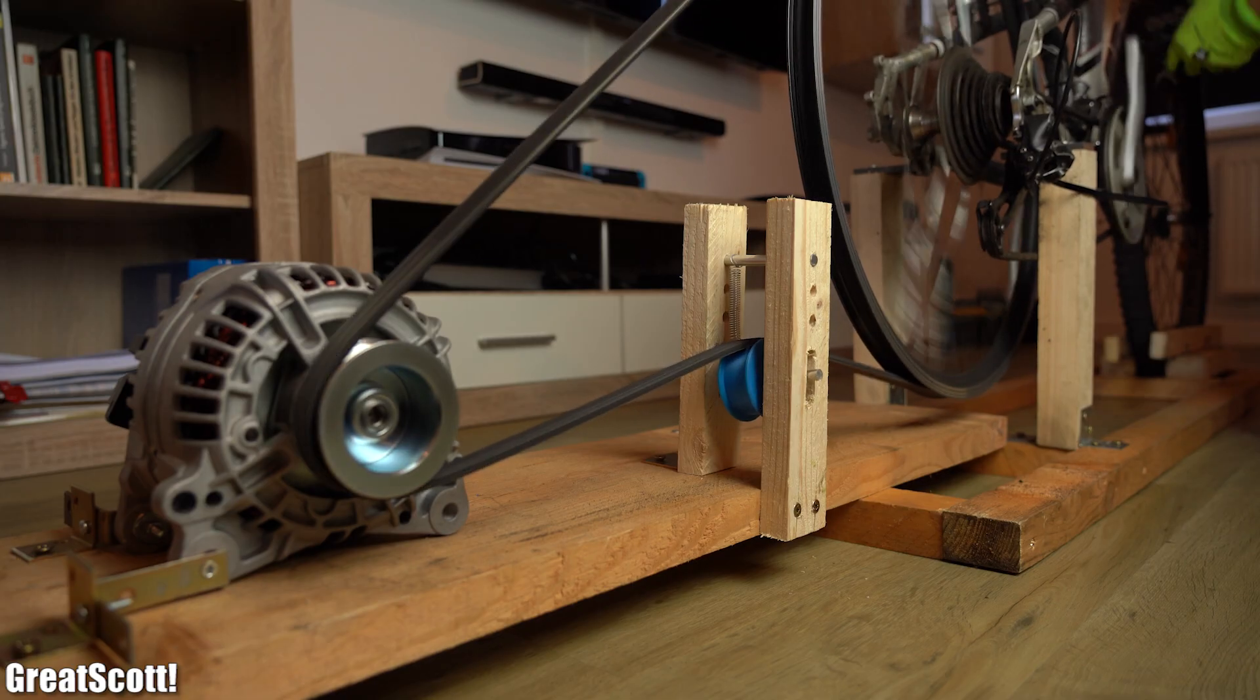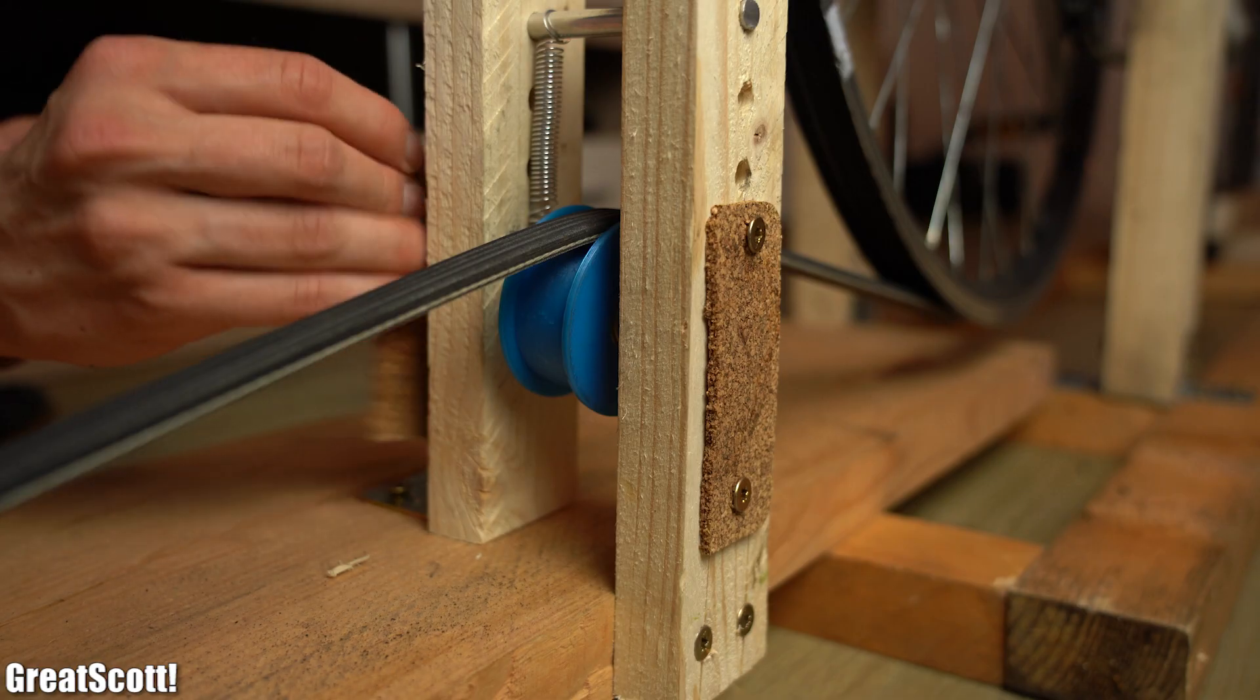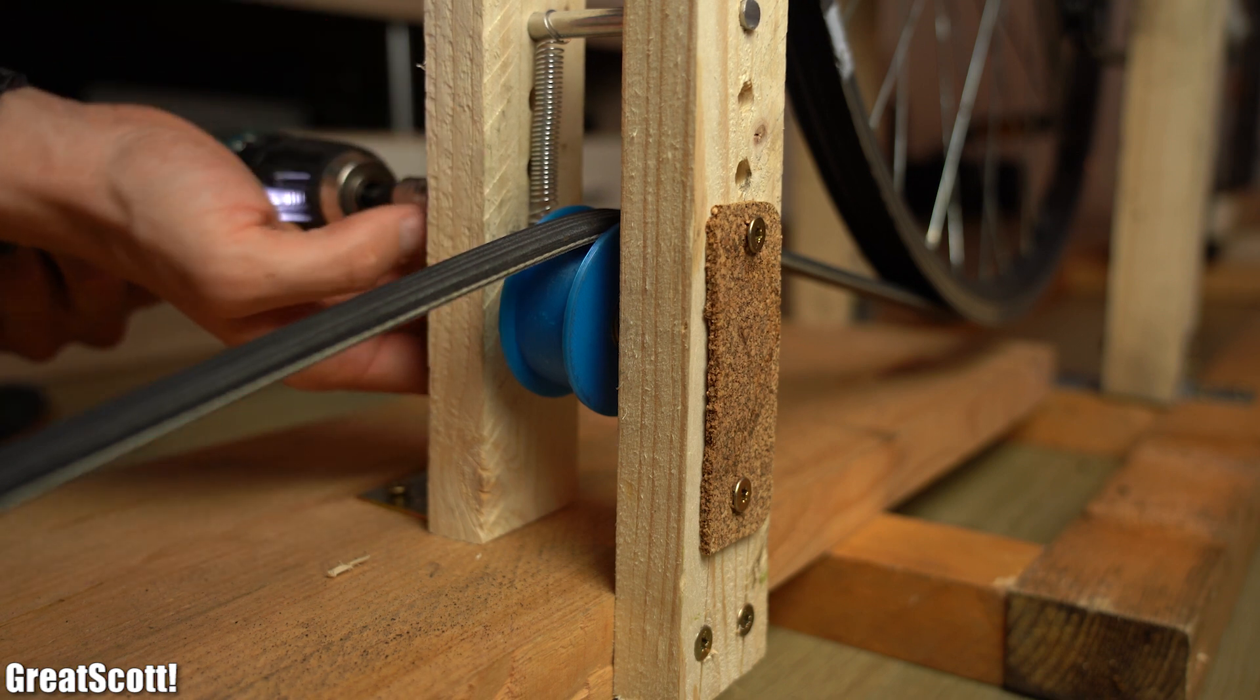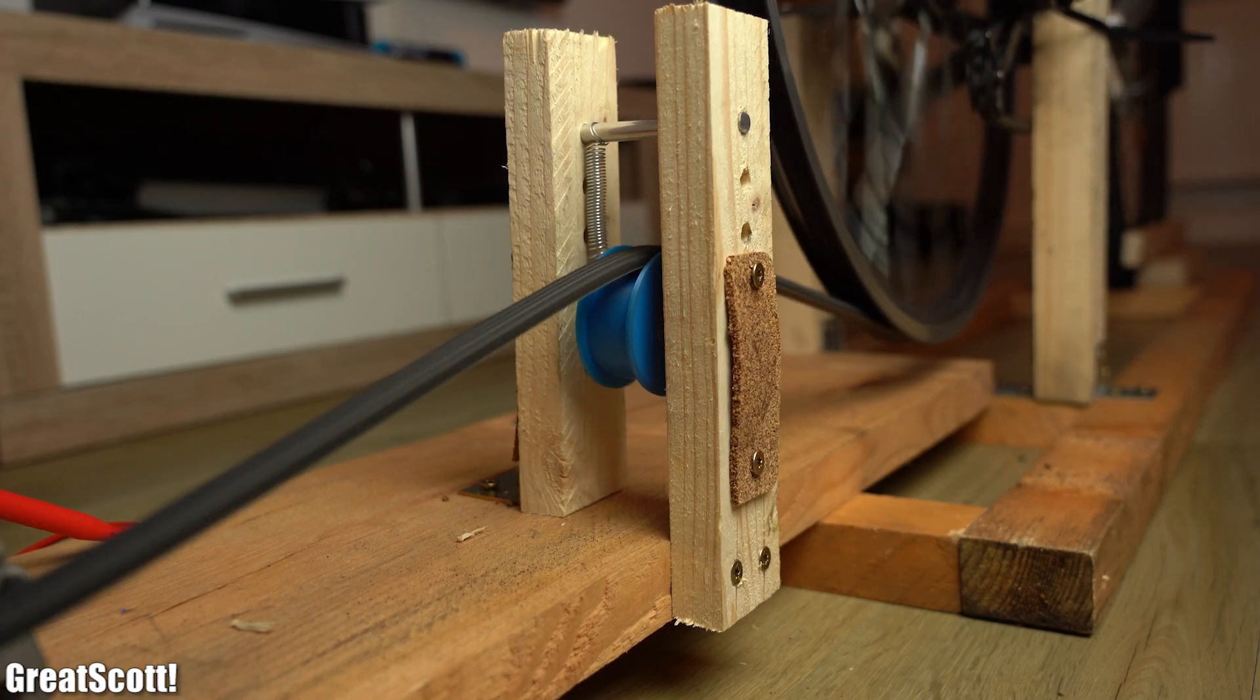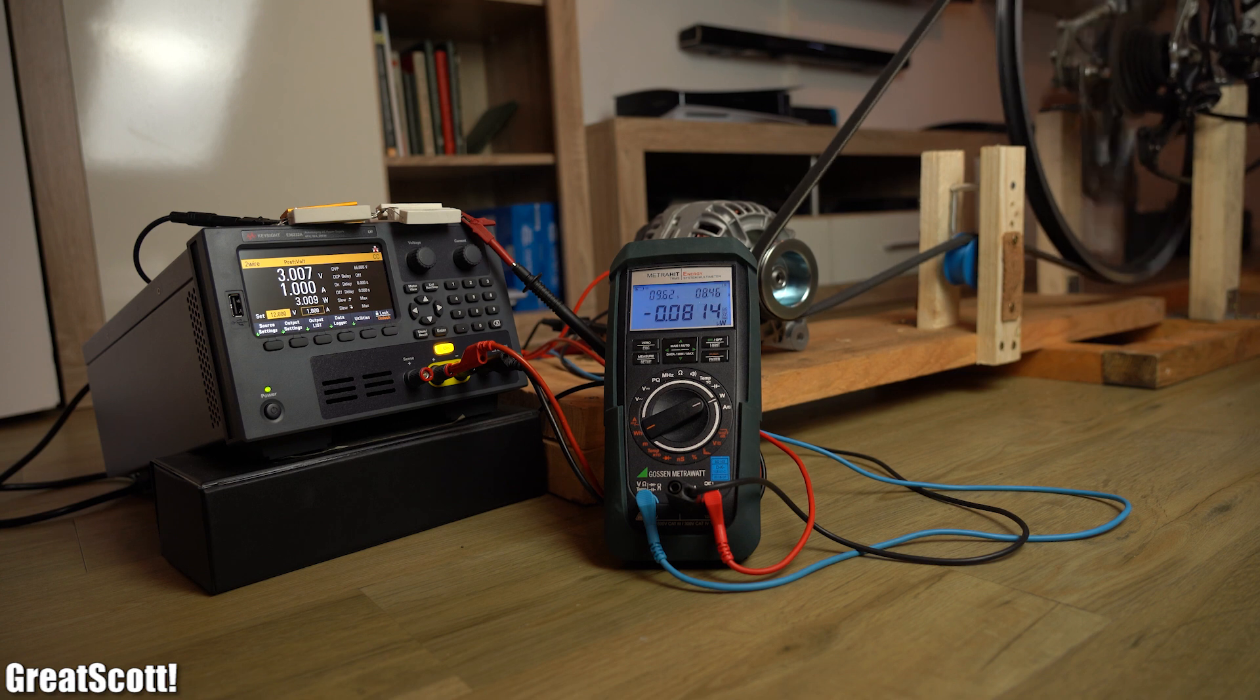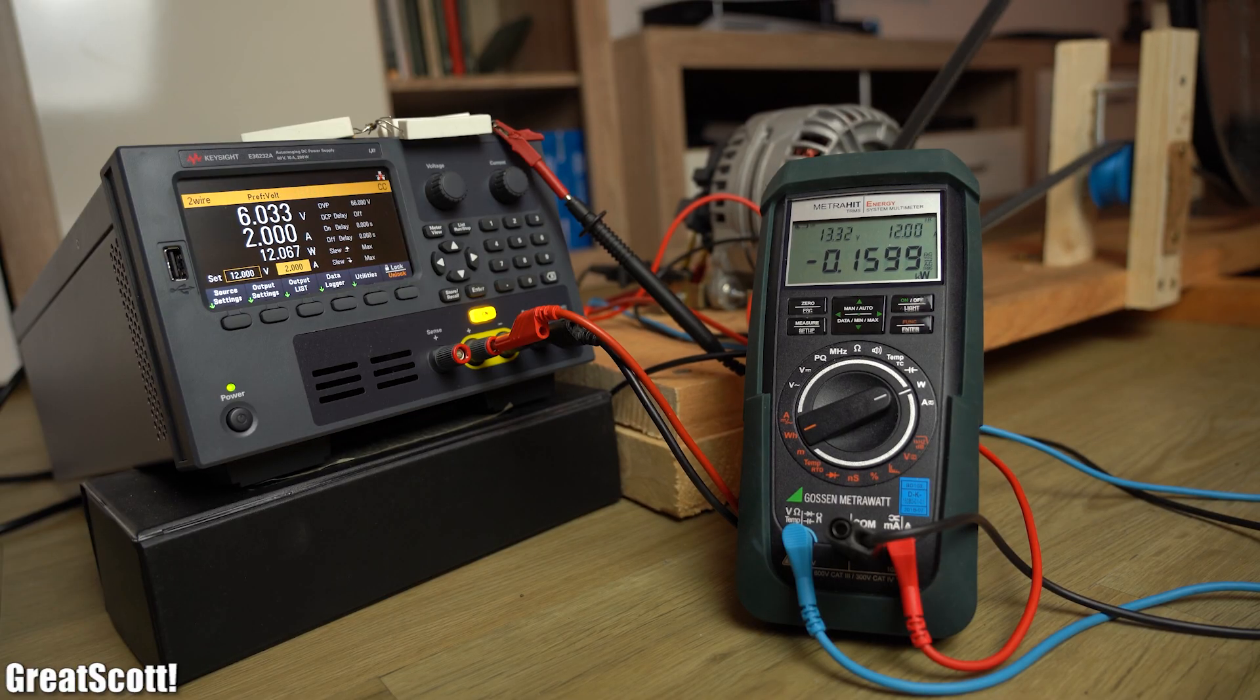The last problem was that the rod would move over time, but to fix that all I had to do was to add a thin cork barrier. And just like that the belt tensioner works acceptably well. And while it did not improve the power output at an exciter current of 1A, it certainly bumped up the output power at 2A to a maximum of around 200W. Awesome!